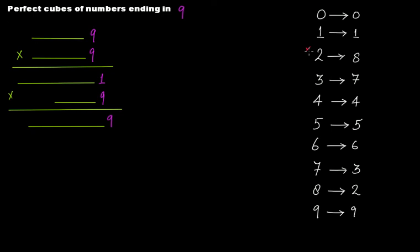So what is the overall trend? If your number ends in 0, the perfect cube ends in 0. If it ends in 2, the cube ends in 8 — and reverse: if it ends in 8, the cube ends in 2. Similarly, if it ends in 3 the cube ends in 7, and if it ends in 7 the cube ends in 3. The digits 2 and 8 are reverses of each other, as are 3 and 7. Remember this — it's very important.